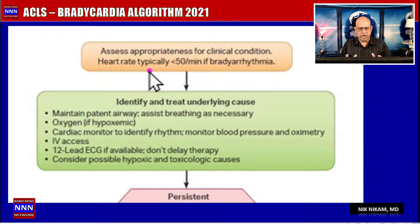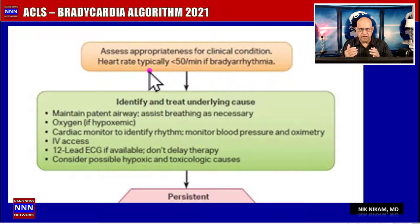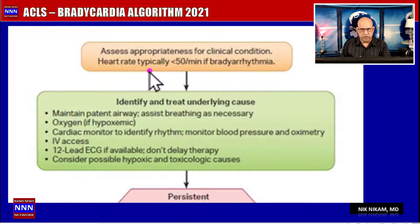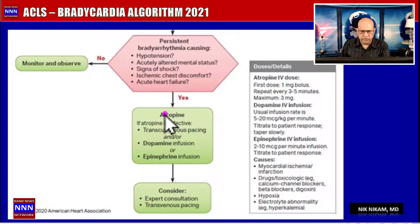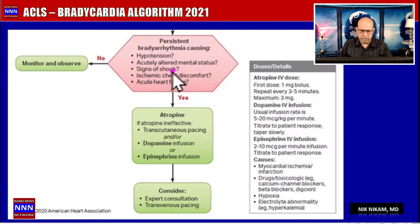When assessing a patient with bradycardia, we want to establish the heart rate and rhythm, maintain adequate airway and oxygen level, establish IV access, get a 12-lead electrocardiogram, look for evidence of ischemia or infarction, and consider the possibility of hypoxia or drug toxicity.